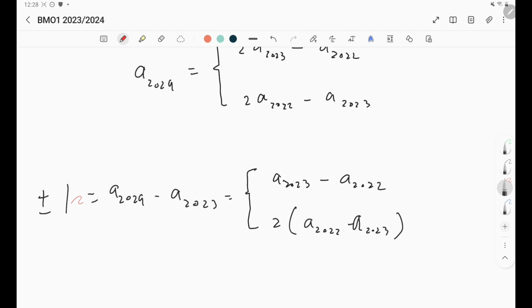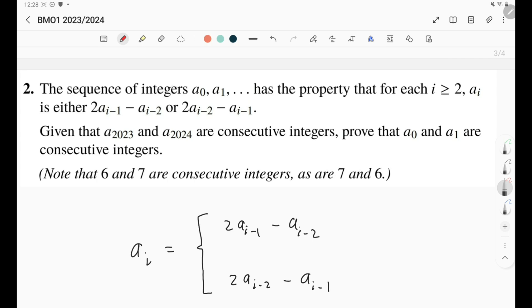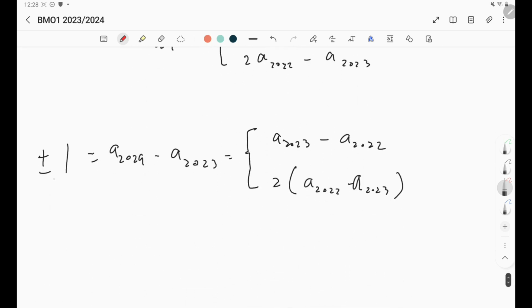Actually, because the sequence consists of integers as they told us, we know that this cannot be the second case, because this is an even number whereas ±1 is an odd number. So that means the only way to get this is through the first case.